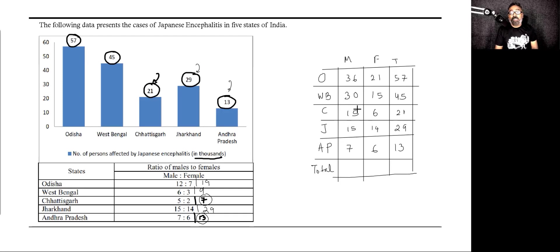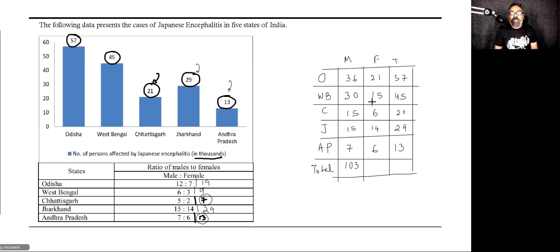Ladies and gentlemen, we have got all the state values. Now at this point you're figuring out: should I add the total? Might as well do it — this is a simple calculation. 36 plus 30 is 66, 15 plus 15 is 30, 66 plus 30 is 96, plus 7 is 103 — that's the total males. For females: 21 plus 15 is 36, plus 14 plus 6 plus 6 gives 62. Therefore the grand total is 165.